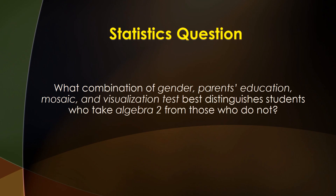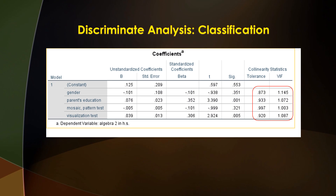Your continuous variables will be gender, parents' education, mosaic, and visualization tests. We will use discriminant analysis instead of logistic regression because we have all continuous independent variables. Looking at this chart, the tolerance values are close to 1 and the VIF values are low for the independent variables, so collinearity is not seemingly a problem.